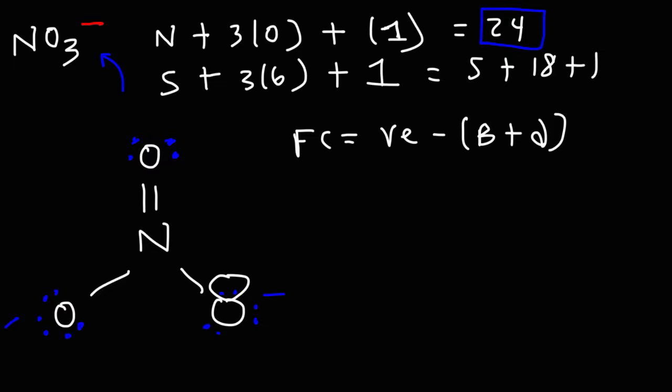Now for the double bonded oxygen, it too has six valence electrons. It has two bonds, four dots. So six minus six is zero. Thus, the oxygen atom on the top is neutral in charge.